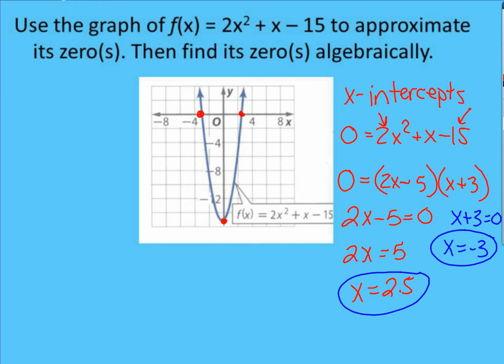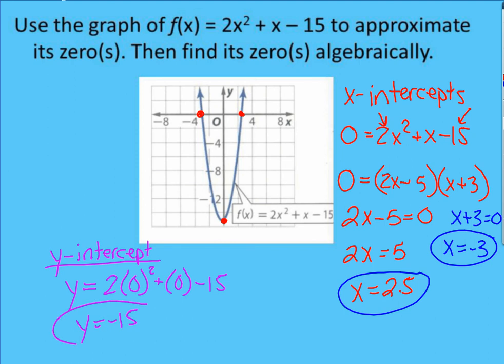Now we need to find our y intercept. To find your y intercept, you plug in 0 for your x's. So to find our y intercept, we're going to say y is equal to 2 times 0 squared plus 0 minus 15. 0 squared is 0, and 2 times 0 gives us 0. If we add 0 to 0, we still have 0. And 0 minus 15 gives us a negative 15. So we have a y intercept at negative 15.